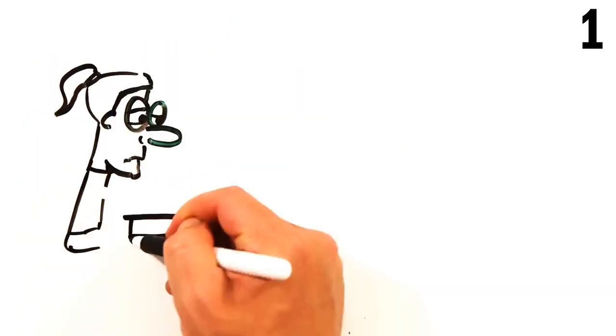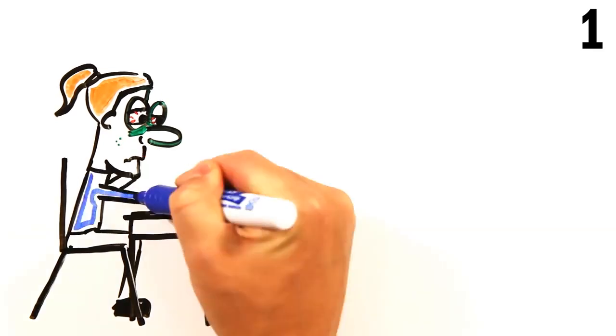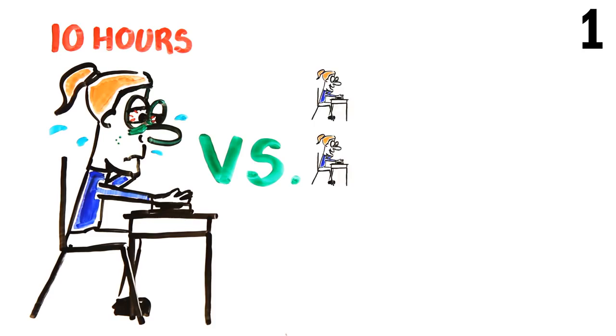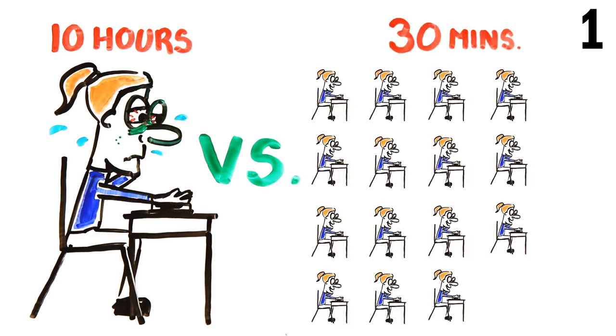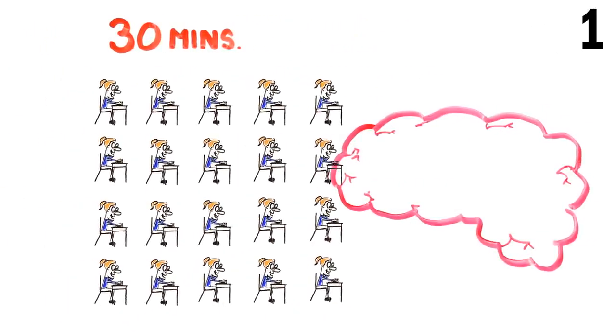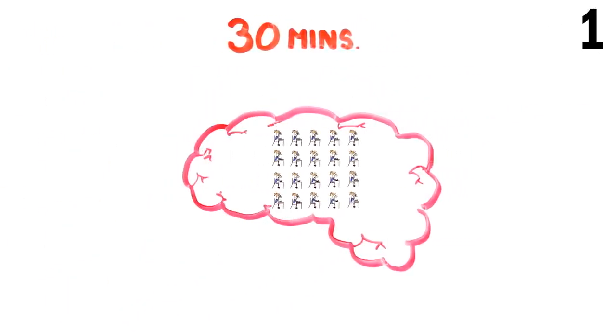First up, research shows that study sessions are most effective in small, short chunks. Instead of cramming in a 10-hour study session, it's much more effective to spread it out into 20, 30-minute sessions over a few weeks. This is because your brain is better at encoding information into the synapses in short, repeated sessions as opposed to one large one.